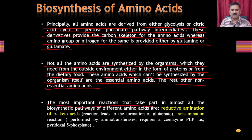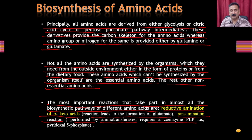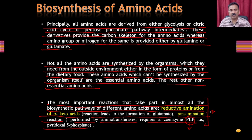The most important reactions in almost all biosynthetic pathways of different amino acids are the reductive amination of the alpha-keto acid, leading to the formation of glutamate, and the transamination reaction performed by the enzyme aminotransferase, which requires the coenzyme PLP — pyridoxal phosphate. Pyridoxal phosphate is a vitamin, and a deficiency in this vitamin means you cannot synthesize some of these crucial amino acids. Amino acids can be synthesized from glycolysis, the TCA cycle, or the pentose phosphate pathway.